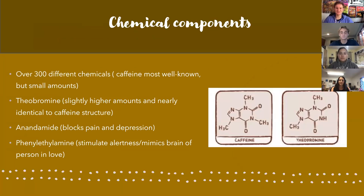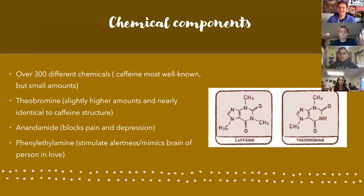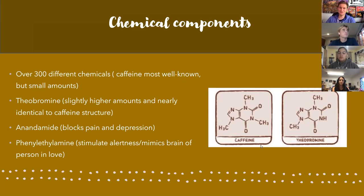Onto the chemical components of chocolate — there are over 300 different chemicals. Caffeine is one of the well-known chemicals, used in very small amounts. Similar to caffeine is theobromine, which is present in slightly higher amounts, and has a nearly identical structure to caffeine, as shown with the diagram on the right. The main difference between the two is the use of a methyl group, CH3, which can be seen in caffeine but not in theobromine.